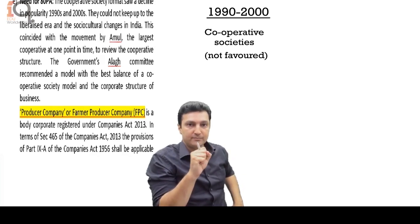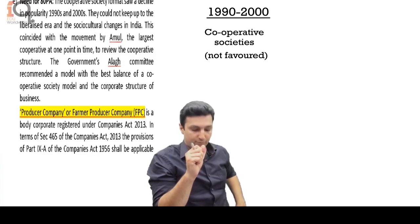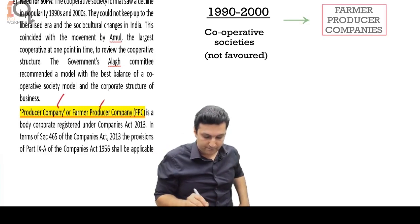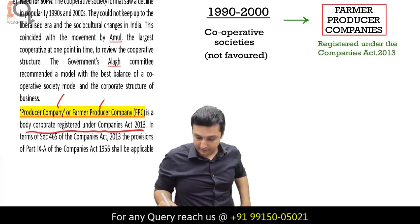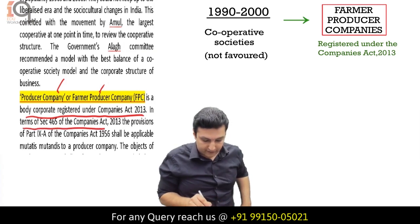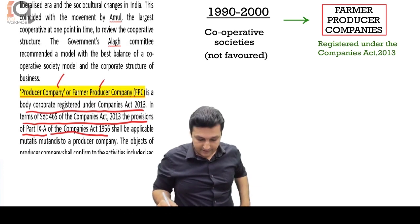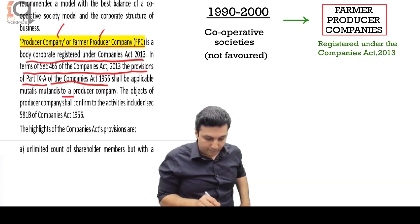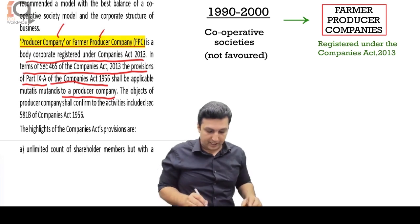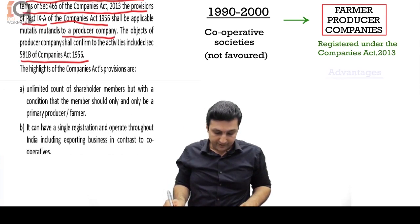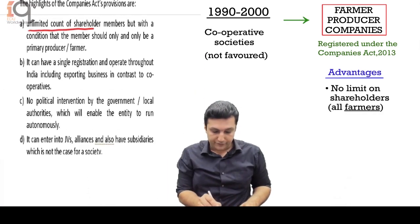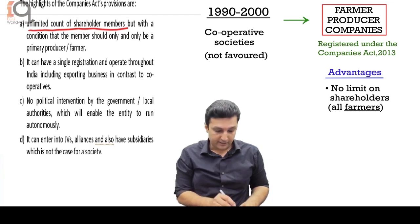At that time, a new entity was given rise to — we call it the producer company or the farmer producer company. It is a body corporate registered under the Companies Act 2013. Under section 465 of the Companies Act 2013, the provisions of chapter 9A of the Companies Act 1956 shall be applicable to a producer company. The objects of the producer company shall conform to the activities included in section 581B of the Companies Act 1956. The highlight is an unlimited count of shareholder members, but with the condition that the member should only and only be a primary producer or farmer.